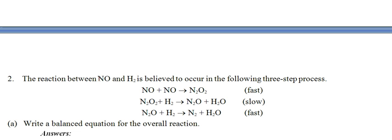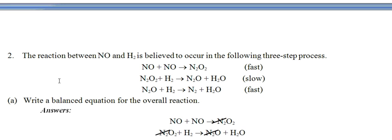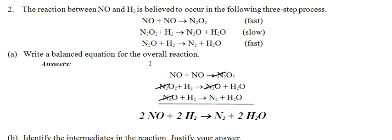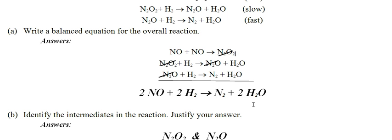Alright, number two. The reaction between NO and hydrogen is believed to occur in the following three steps — fast, slow, fast. Part A wants you to write the balanced equation for the overall reaction. When doing the overall reaction, we cancel out like terms that appear on both sides. N₂O₂ cancels on both sides, and N₂O cancels as well — so we have two intermediates here and no catalysts. There's our balanced equation, and be sure that you have the same number of atoms on both sides — in this case, we do.